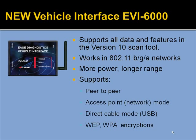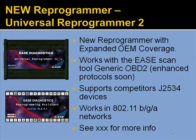Here's our new vehicle interface. As you can see, it's cabled or wireless. It supports 802.11 B/N/G networks and has more power with a longer range. It supports ad hoc peer-to-peer and infrastructure networks, as well as various encryptions. The new reprogrammer, our Universal Reprogrammer 2, has greatly expanded OEM coverage. It works with the Ease scan tool generic OBD2, and we are releasing the enhanced protocols very shortly. It also supports competitors' J2534 vehicle reprogramming interfaces, so if you don't have our vehicle reprogrammer and you want to run our scan tool on your J2534 interface, you certainly can now. It also works on 802.11 B/N/G networks — see our website, obd2.com, for more info.